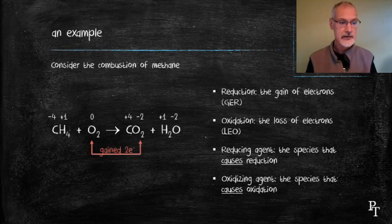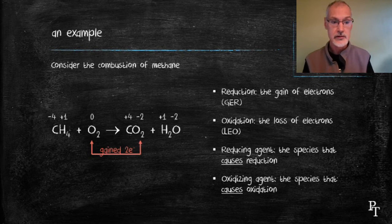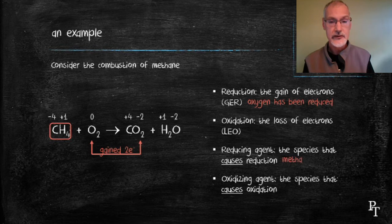From this example, I can see that oxygen has been reduced because it gained electrons to go from 0 to -2. The substance that caused this is methane, which is identified as the reducing agent.